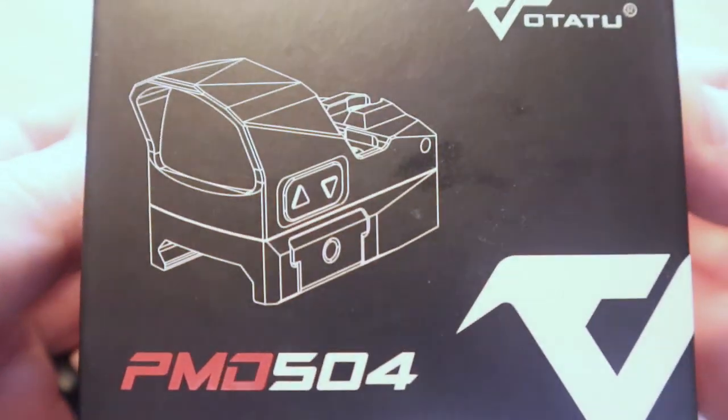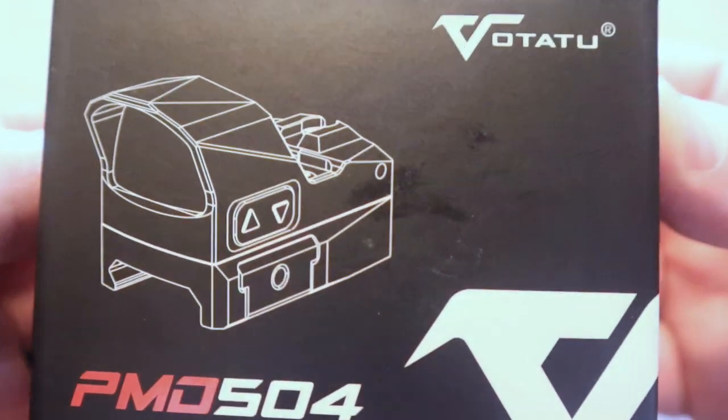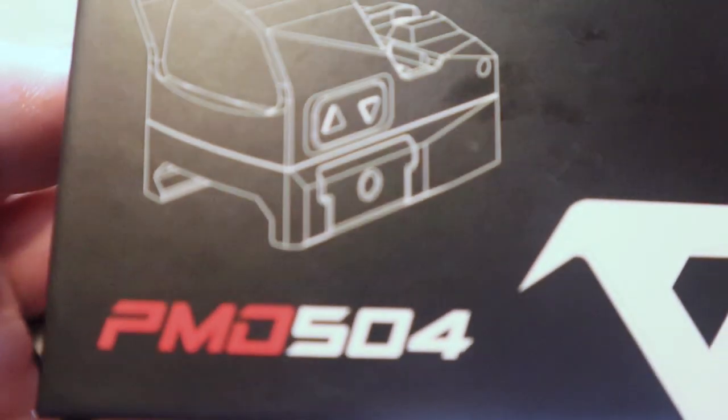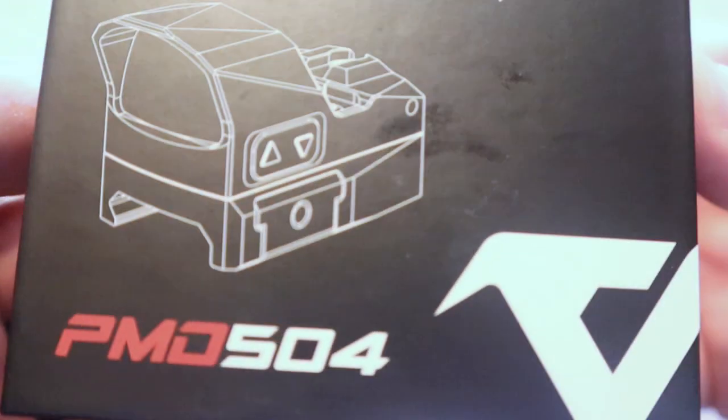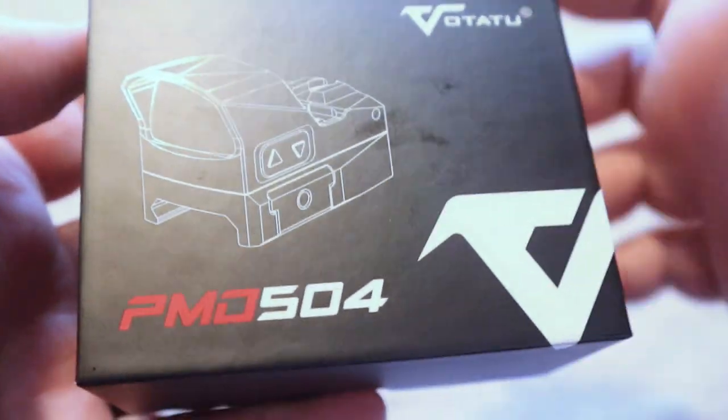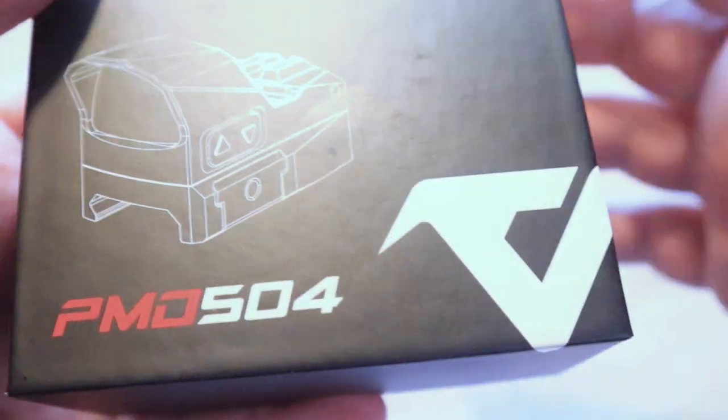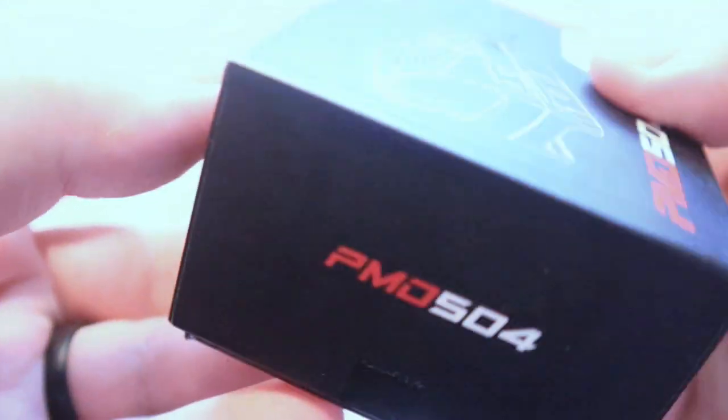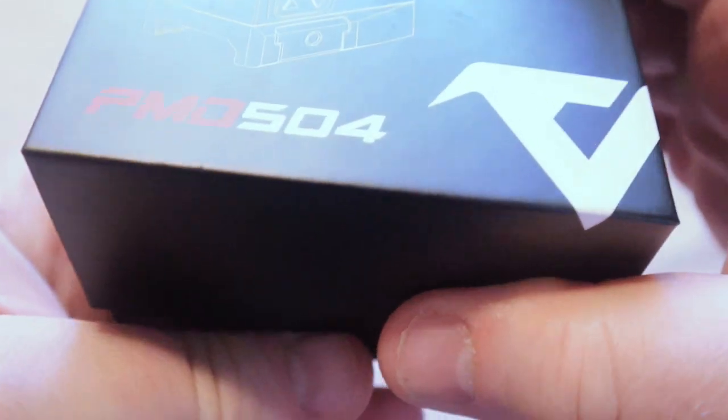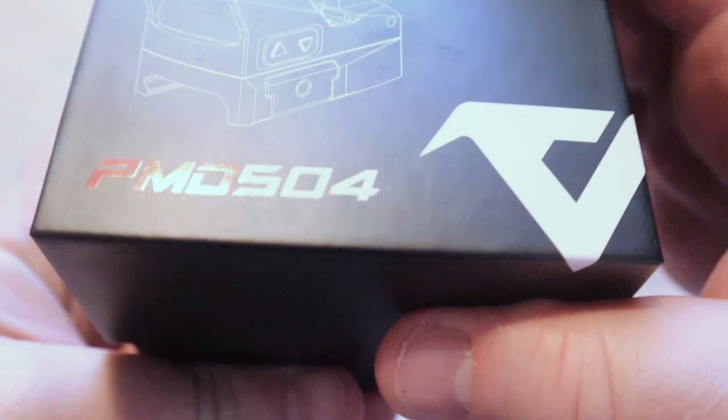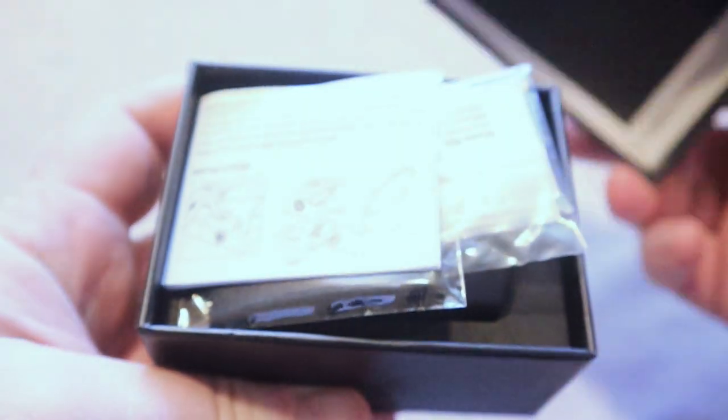So this is the current optic that they had sent me. This is the 504, the PMD 504 Mini Red Dot, Micro Red Dot, whatever the name is, the acronym for it. It comes in just a standard box, as you can see here, but the box is not what we are interested in. So I'm just going to pull the lid off, and we're just going to show you what's inside.